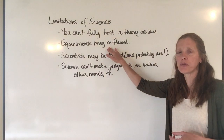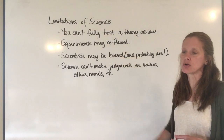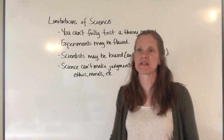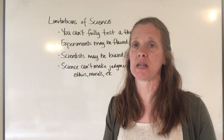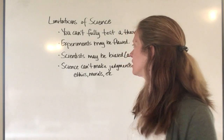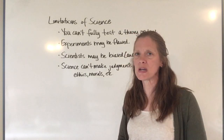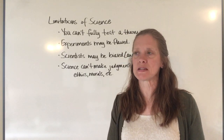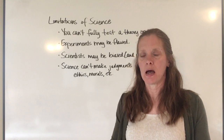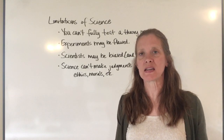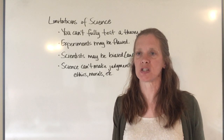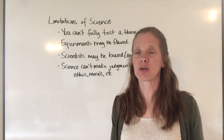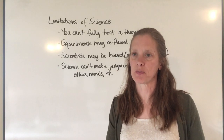The second limitation is that experiments may be flawed. As you read about all the experiments that supposedly supported spontaneous generation, realize those experiments didn't always work because they hadn't imposed the right conditions. If experiments are flawed, you're going to get false information.